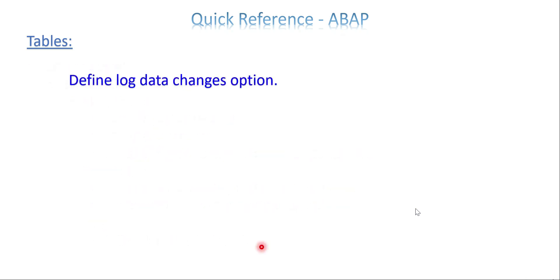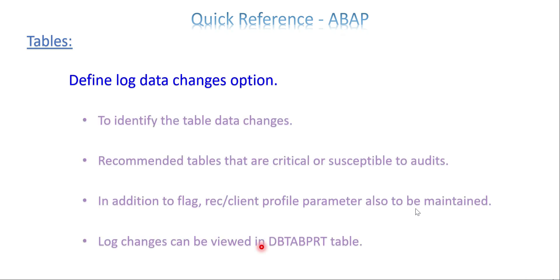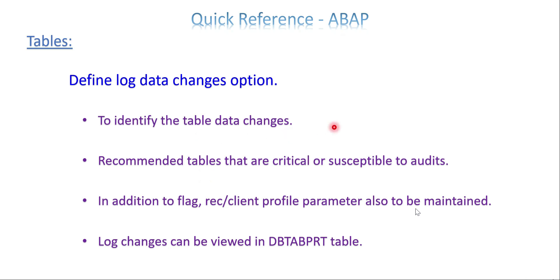Define data log changes option. If you create a table there is an option called log data changes, which is used to identify and track changes to the table data. It is not recommended for every table — only enable it when the data is critical and needed for an audit. In addition to the flag, a profile parameter called rec_client must also be maintained, which is handled by Basis. Log changes can be viewed in the table DBTABPRT, and also via transaction SCU3 at the table level.